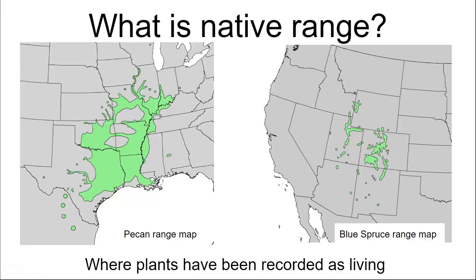The pecan has a really wide native range — all the way down into Mexico, parts of Texas, up into Iowa following the Mississippi River Valley. But does that mean you can take a pecan from Texas and plant it in Missouri? The answer is not really — those are very different climates. It also matters what region the plant comes from. Something from southern Indiana planted in Missouri might be okay because it's much more similar in latitude.